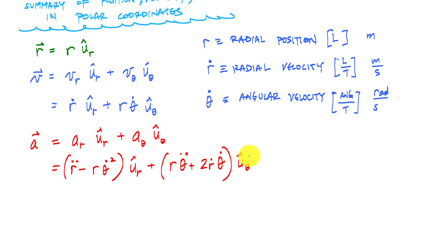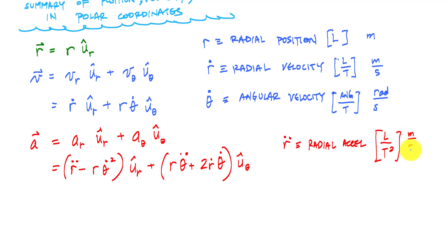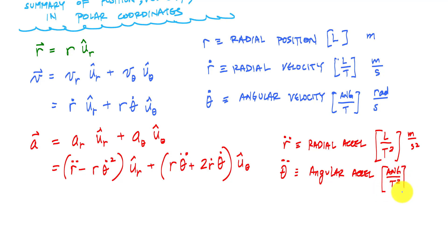r-double-dot is the radial acceleration with units of length over time squared, or meters per second squared. Theta-double-dot is angular acceleration — angular distance over time squared — and we typically use radians per second squared.